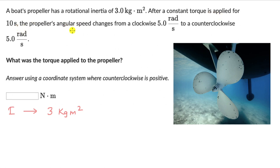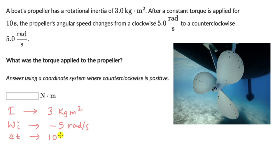There is an initial angular speed which is clockwise at 5 radians per second, so ωi = -5 rad/s. I'm writing minus because the counterclockwise direction is positive, and initially the angular speed is clockwise. The torque is applied for Δt = 10 seconds. The final angular speed becomes ωf = +5 rad/s, positive because it is now in the counterclockwise direction. We need to figure out the torque τ.